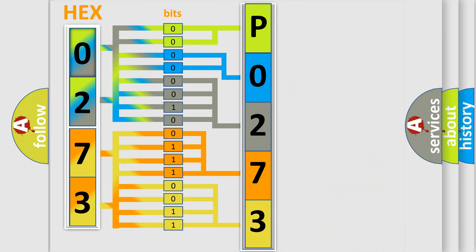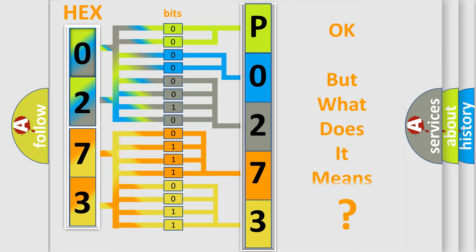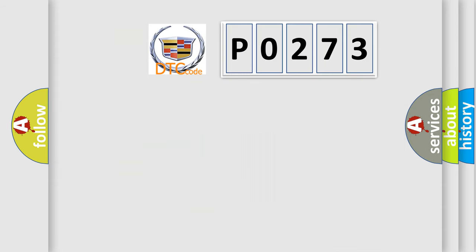We now know in what way the diagnostic tool translates the received information into a more comprehensible format. The number itself does not make sense to us if we cannot assign information about what it actually expresses. So, what does the diagnostic trouble code P0273 interpret specifically for Cadillac car manufacturers?